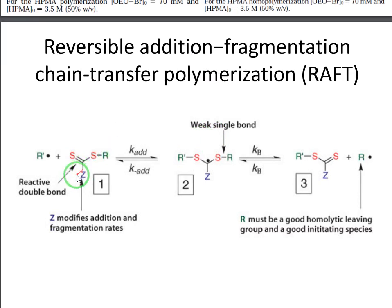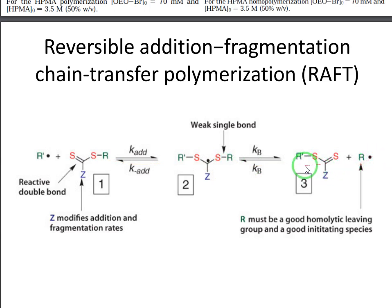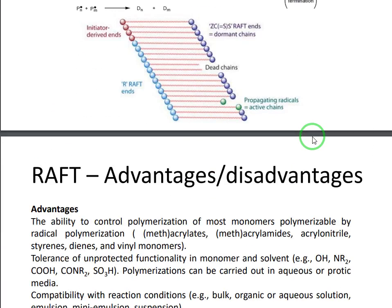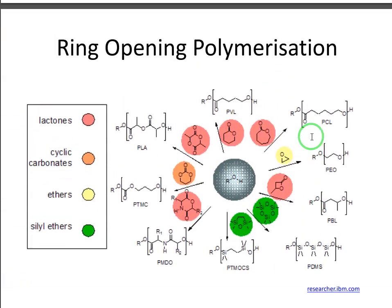For the RAFT polymerization, we use the RAFT agent as the chain transfer agent for controlling our polymerization. The continuous reversible addition and fragmentation happens: when a chain is added here it will be detached, then added again, so the polymerization of chains happens at the same rate — all chains grow at the same rate and we have a uniform distribution of molecular weight.